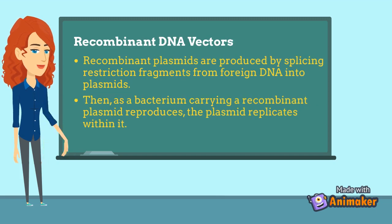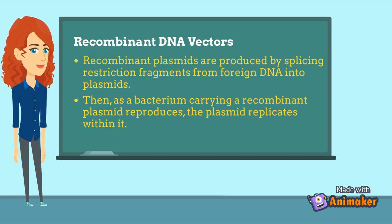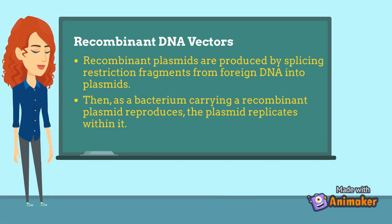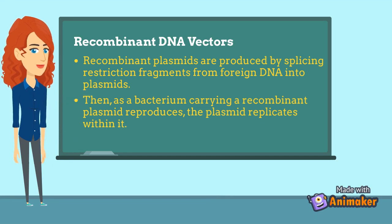Recombinant plasmids are produced by splicing restriction fragments from foreign DNA into plasmids. Then, as a bacterium carrying a recombinant plasmid reproduces, the plasmid replicates within it.